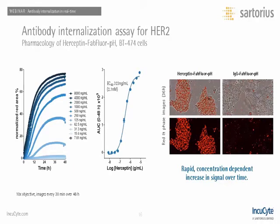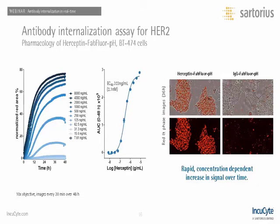The next stage looks at antibodies of interest in further detail. Data here examines the HER2 response in BT474 cells using Herceptin labeled with the FabFluor reagent. Increasing concentrations of Herceptin show a clear increase in internalization response over a 48-hour time point. Taking the area under the curve allows plotting of a full concentration response curve and calculation of the EC50. Images on the right-hand side show a clear red signal in BT474 cells and a very weak non-specific IgG isotype control response, confirming a rapid, concentration-dependent increase in specific signal over time.